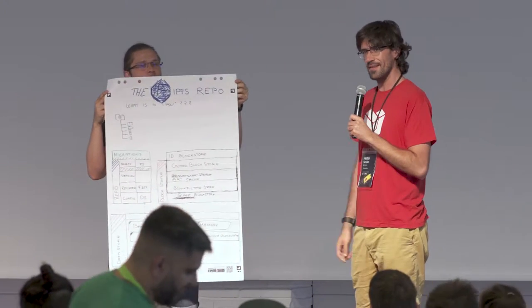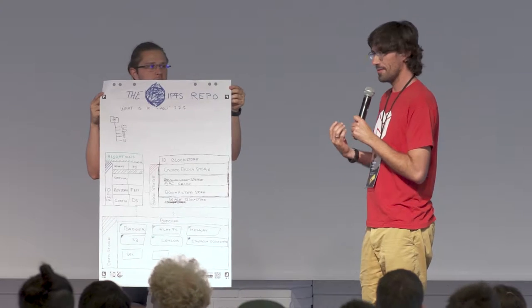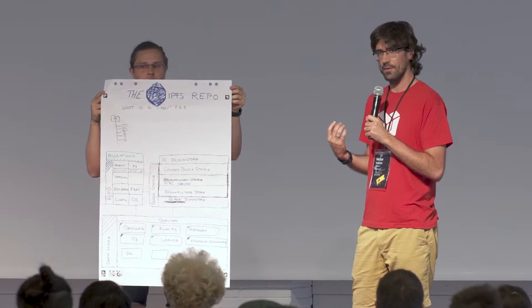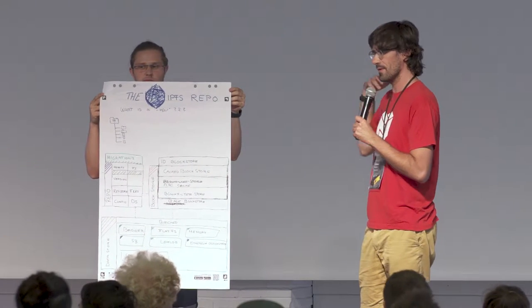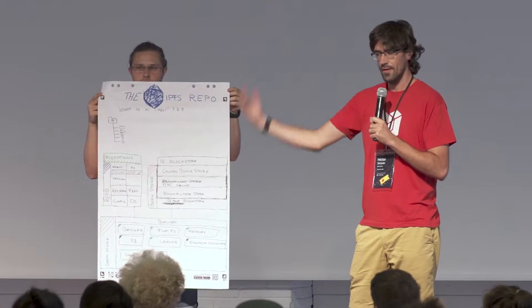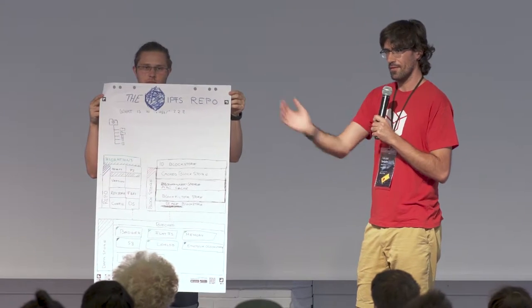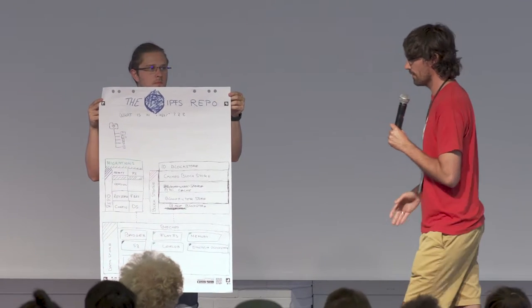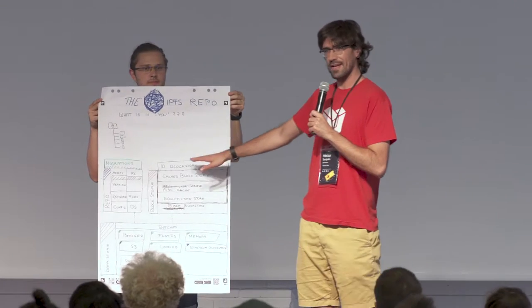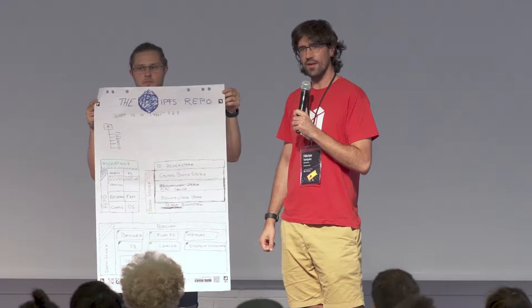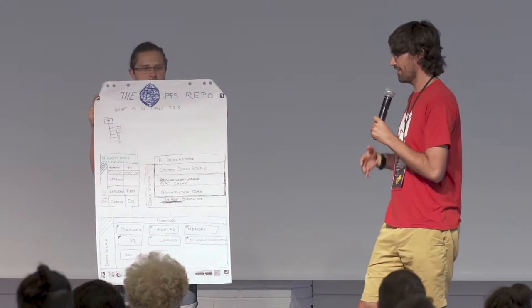Did you know that when you receive a block from BitSwap and you want to write it to disk, or when you want to read that block to send it to someone else by BitSwap, it goes through an ID block store that allows you to have identity hashes?